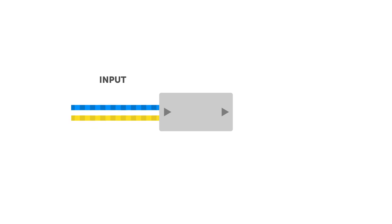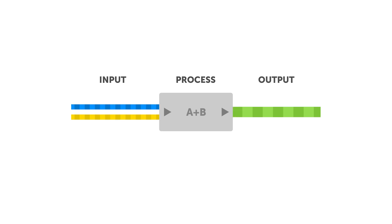At its most basic level, a math channel can be thought of as a simple input-output relationship. We have an input which is either a single or multiple log channels. Then we carry out a process or manipulation on that logged input data. The output of that manipulation is a new channel itself — a math channel. The analysis software then automatically carries out this process for us for each log file that is opened.